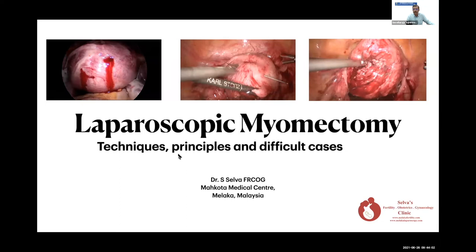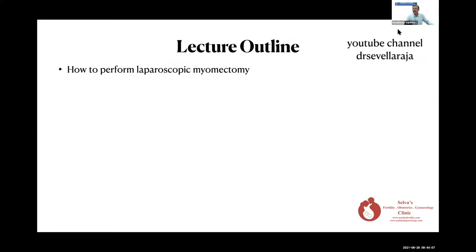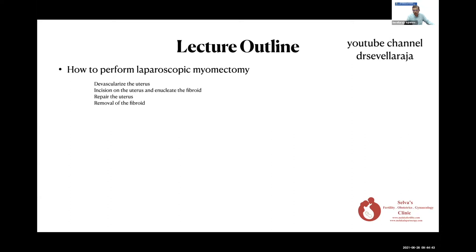This is my lecture outline. Firstly, I will discuss what we need to do when performing a laparoscopic myomectomy. All the videos I'm showing here are already on my YouTube channel. When we look at laparoscopic myomectomy, there are a few steps: we need to devascularize the uterus, make an incision, enucleate the fibroid, repair the uterus, and remove the fibroid. This operation is not difficult, but very tedious.